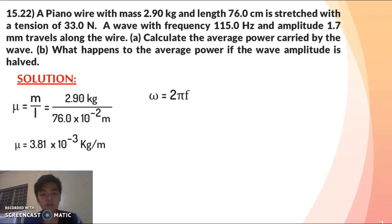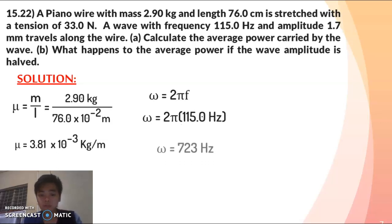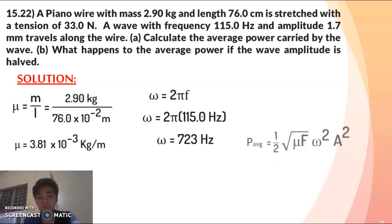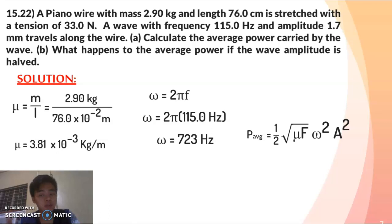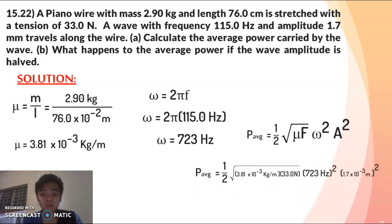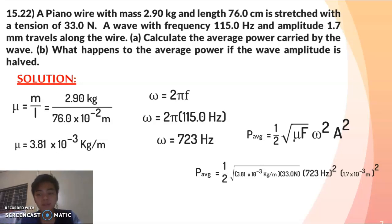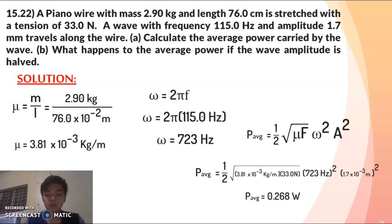Now for angular frequency: omega equals 2*pi times 115 hertz, giving 723 radians per second. Substituting into the average power formula: P_avg = (1/2) × sqrt(3.81×10⁻³ kg/m × 33 newtons) × (723)² × (1.7×10⁻³ m)². This gives an average power of 0.268 watts, which is our final answer for part A.